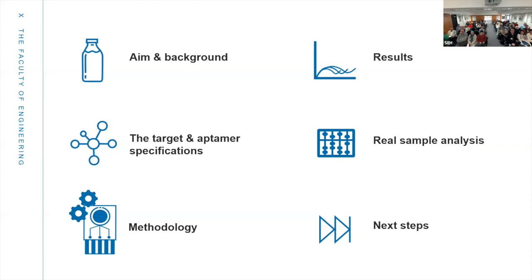Just the objectives of my presentation. First I'll cover the aim and the background of my PhD project, I'll move on to the target and the aptamer specifications, I'll then show the two methods and how they compare to each other with results from both methods. Then I'll show some attempts to do analysis in a real sample, which is milk in my case, and finally I'll cover the next steps I aim to take in my project.